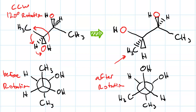I should stress dihedral angles. What we did was we rotated the front carbon 120 degrees. So when we started out, the hydroxyl group on the back carbon had a dihedral of 60 degrees from the front carbon — and that's counter-clockwise. We did a 120 degree rotation, and now the back carbon is 60 degrees clockwise.